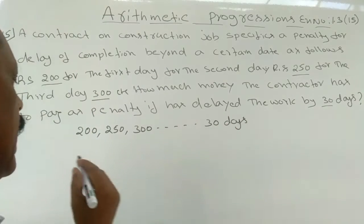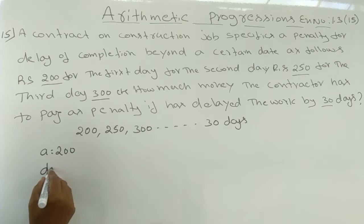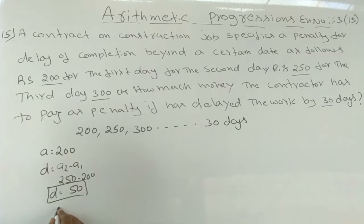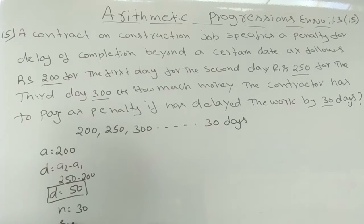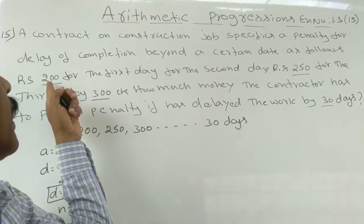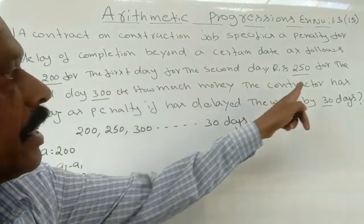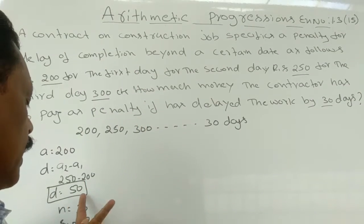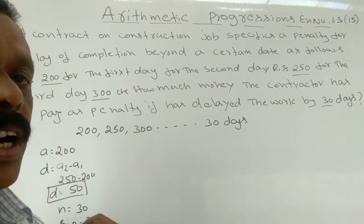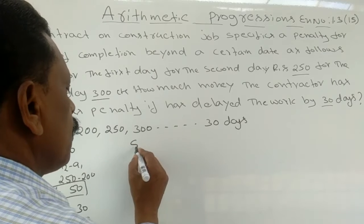Here a is equal to 200, d is equal to a2 minus a1, that is 250 minus 200, which equals 50. The difference is 50 and n is equal to 30. We want to find the total penalty for 30 days using the sum formula Sn = n/2 × (2a + (n−1)d).